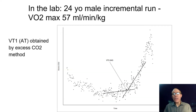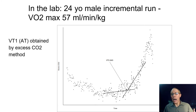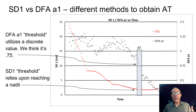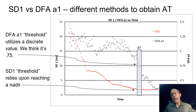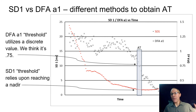In the lab, here's a nice case: a 24-year-old man doing a treadmill run for VO2 max testing. We calculated his VT1 using the excess CO2 method and identified where he reached his aerobic threshold. Looking at SD1 and alpha 1 together, the SD1 in red comes down and hits its nadir right at the aerobic threshold. The alpha 1 in black crosses also comes down and crosses the 0.75 boundary right at the aerobic threshold — confirming that an alpha 1 of 0.75 is equivalent to the aerobic threshold in gas exchange testing.